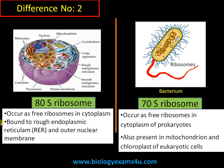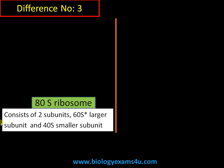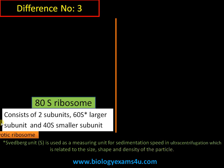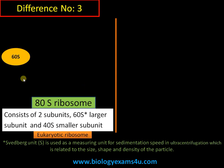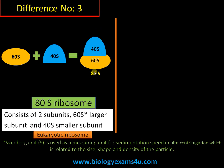Difference number three concerns the subunits. The 80S ribosome consists of two subunits: a larger 60S subunit and a smaller 40S subunit. The unit 'S' stands for Svedberg unit, which is used to measure sedimentation speed during ultracentrifugation. The two subunits combine to form the 80S ribosome, as the additive combination of two three-dimensional structures reduces the overall volume.